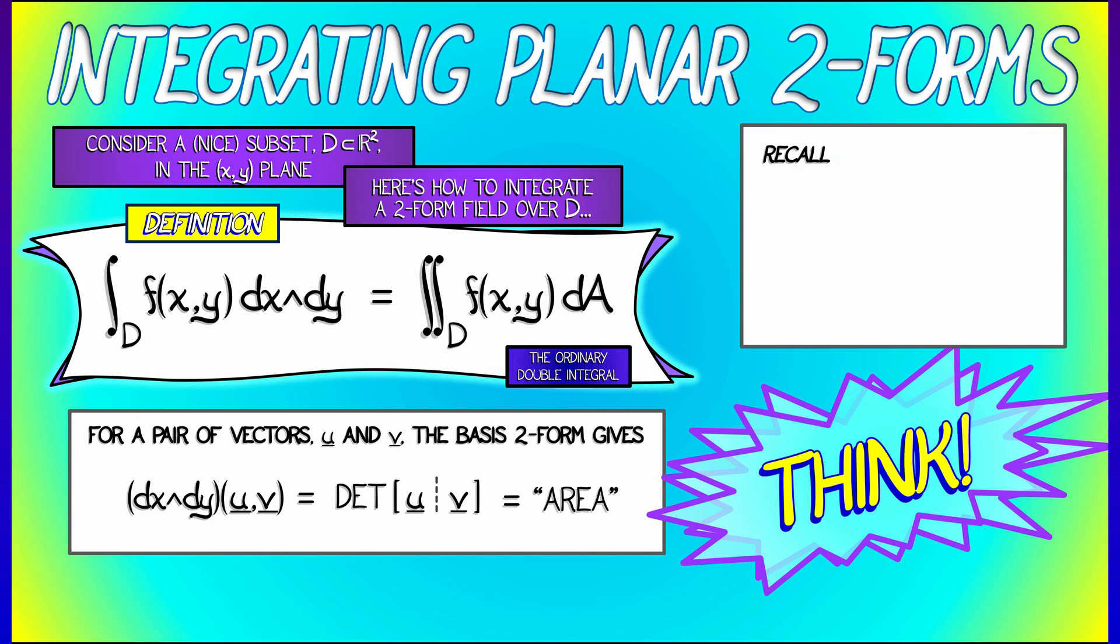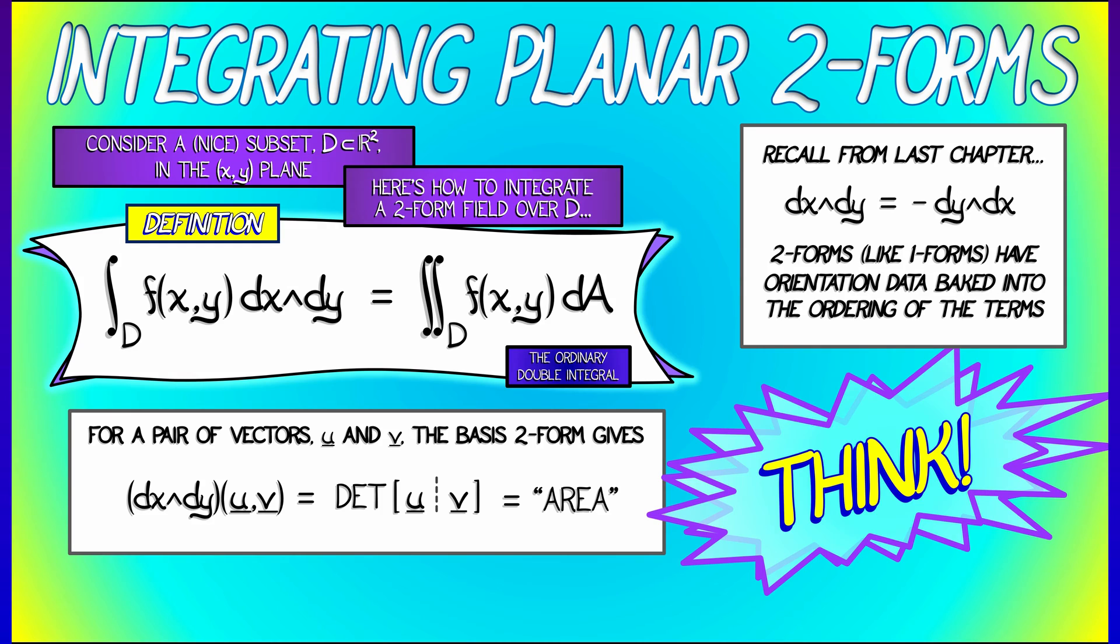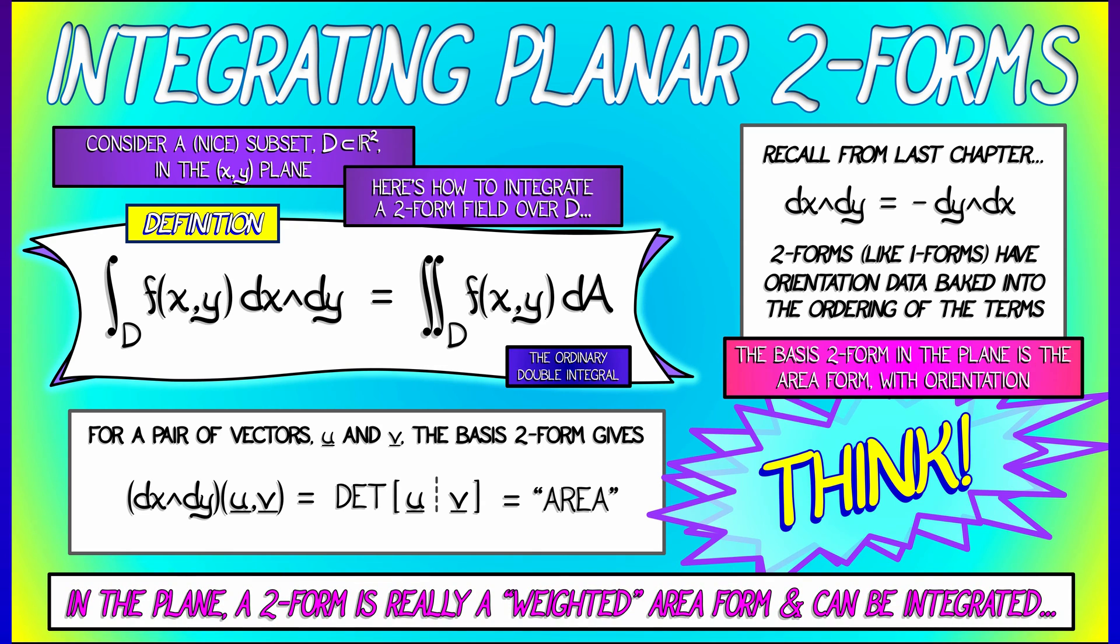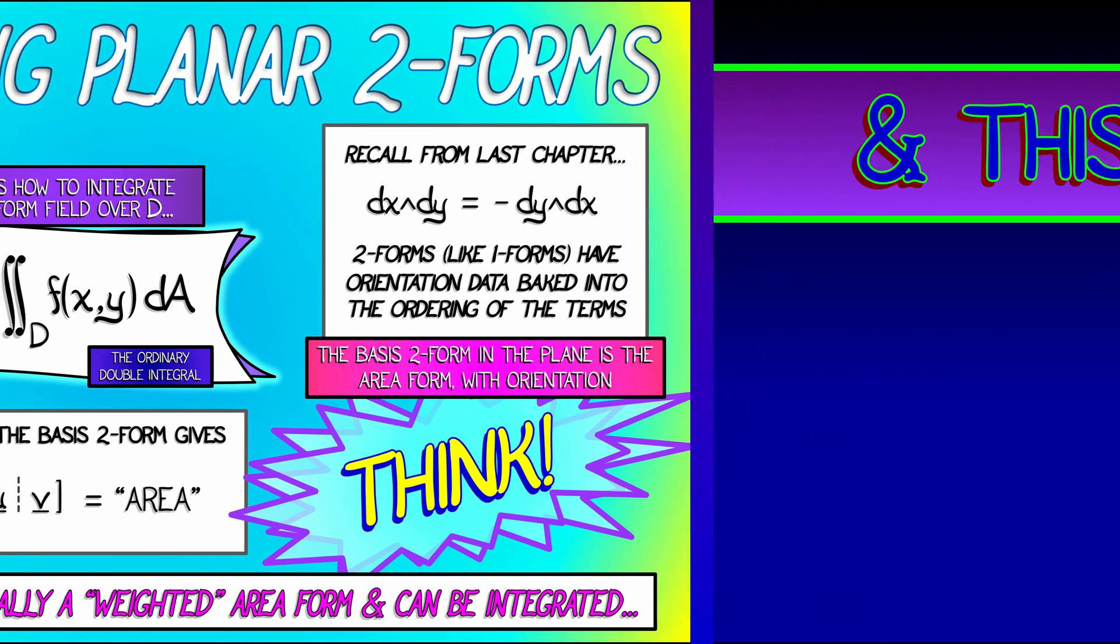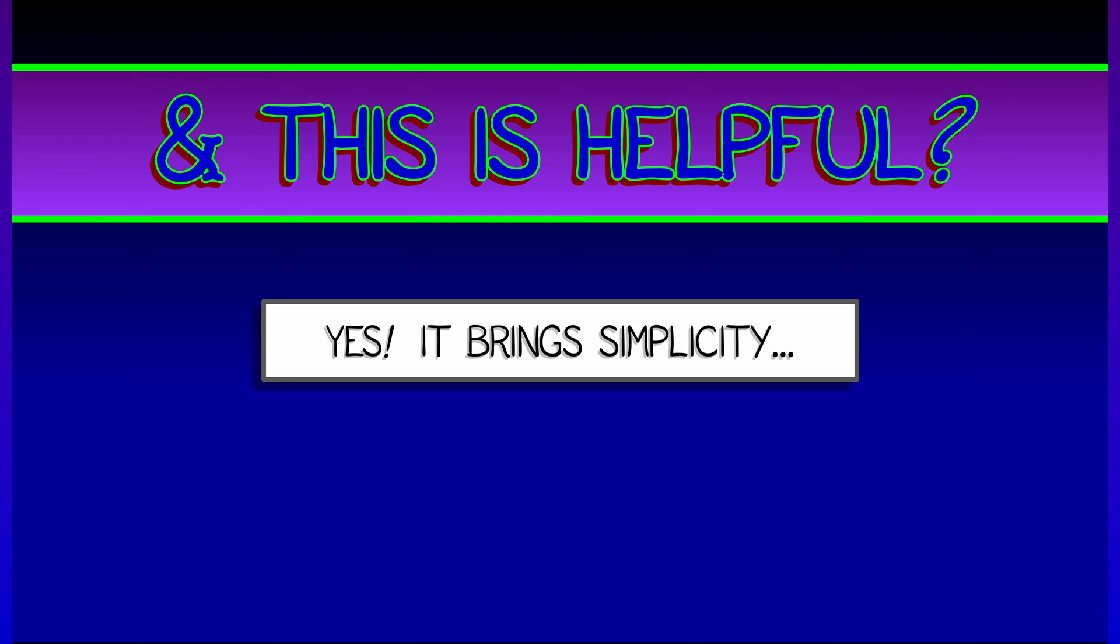Now there are some subtleties here. Because recall, we now know that dY wedge dx and dX wedge dy are really related by a minus sign using that anti-commutativity. That means that we're really looking at oriented area in the plane. So a two-form in the plane is really a weighted oriented area form, and that's something that we can integrate using a standard double integral. Is this really going to help us out with anything? Yes, it is.